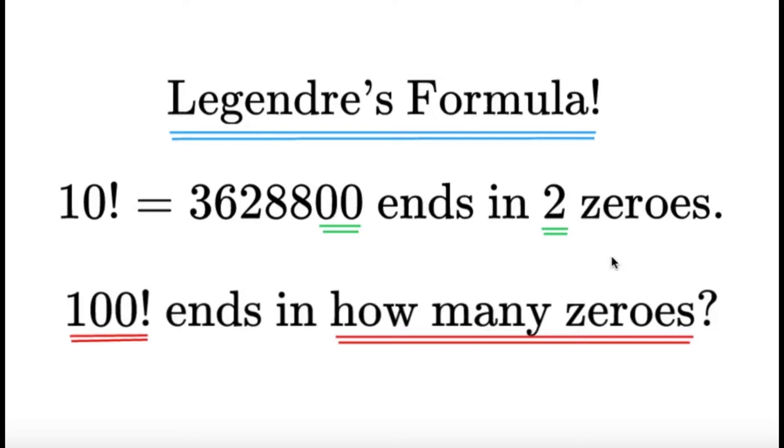Hello, hello! It's Tumplet here. Here's an item on number theory. 10 factorial, which is equal to 3,628,800, ends in two zeros, as you can see. Now, 100 factorial ends in how many zeros?